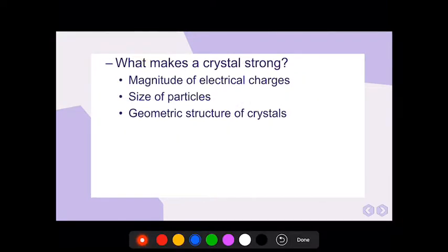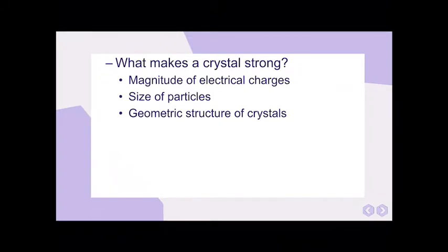What makes a crystal strong? The magnitude of the electrical charges. It has bonds that are very strong, if it's ionic bond or metallic bond. Remember from the previous lesson, they'll have a very high boiling point and melting point. So they're very strong. The sizes of the particles, how big are they? And the geometric structure of the crystals. We've already talked about this. If it is polar, it's going to have a slightly higher melting point and boiling point than a nonpolar molecule. That's what makes a crystal strong.